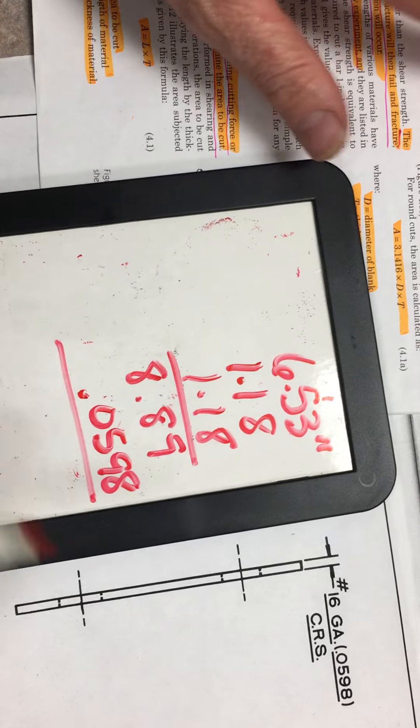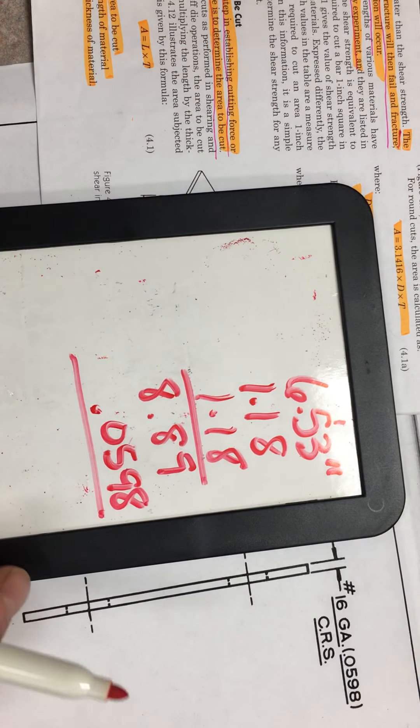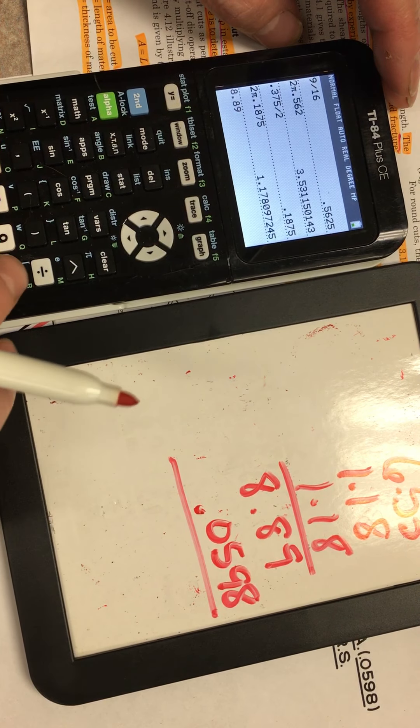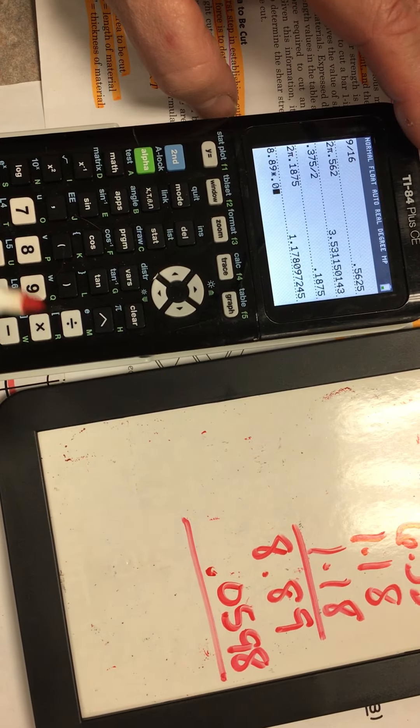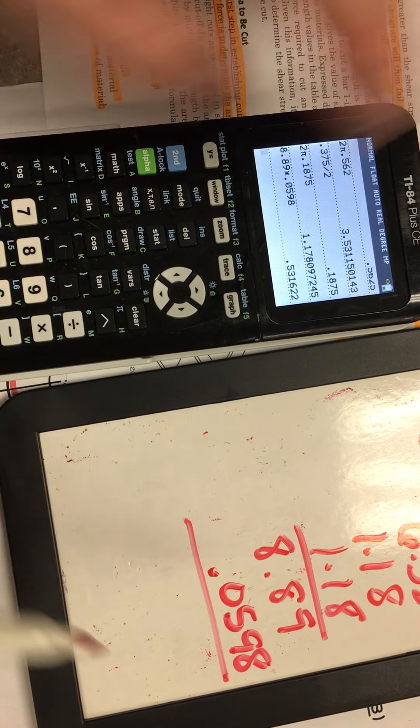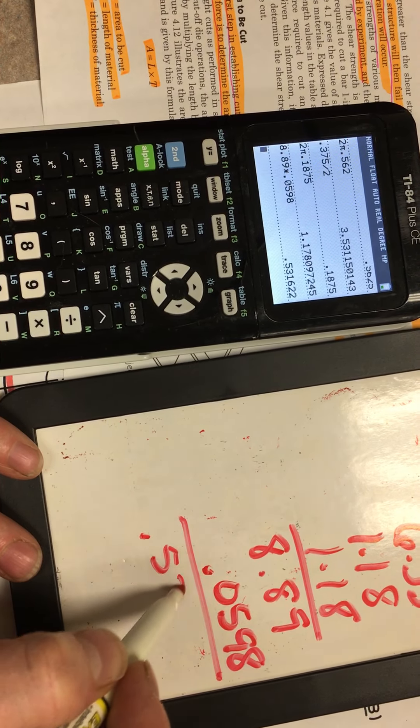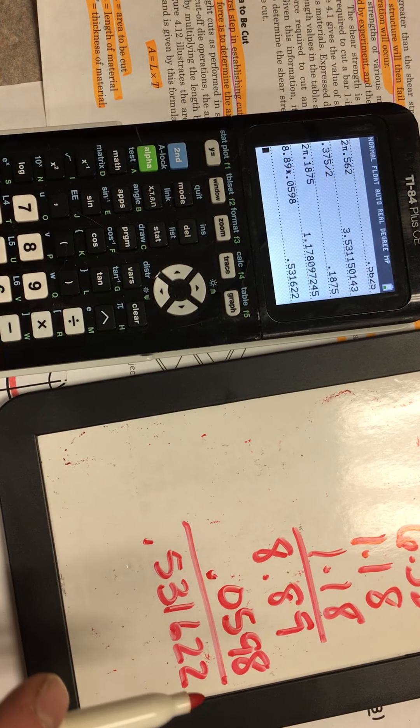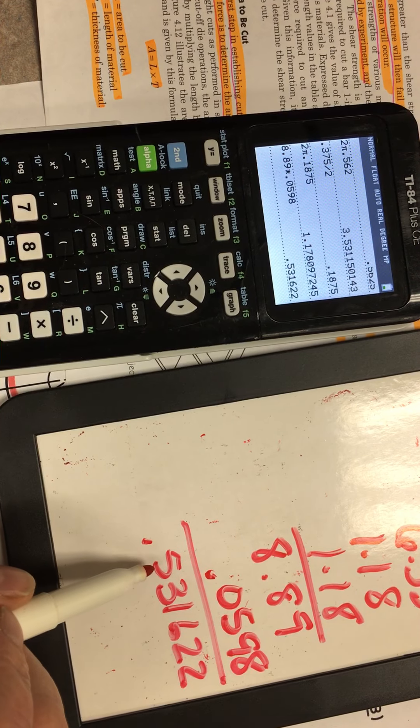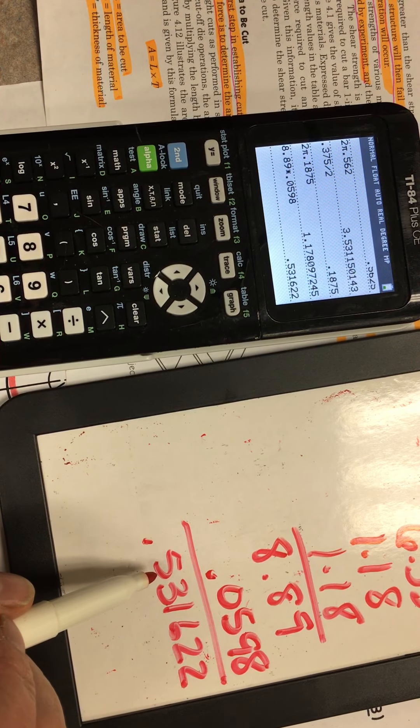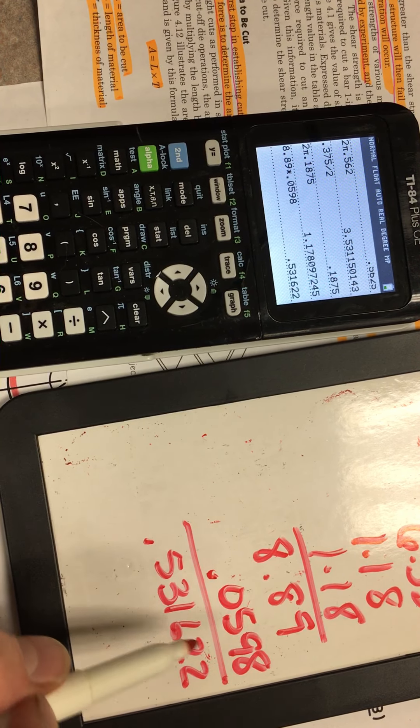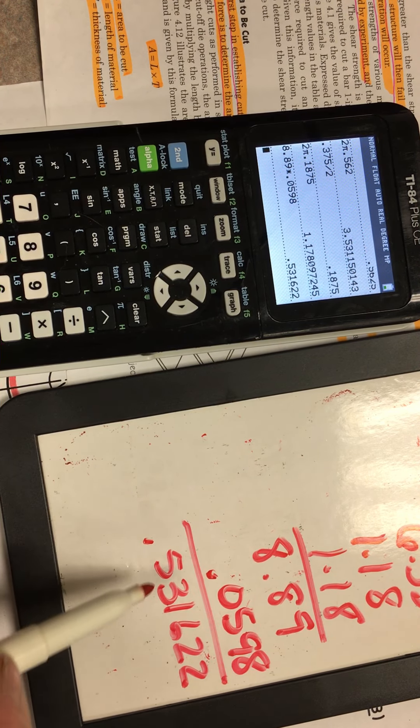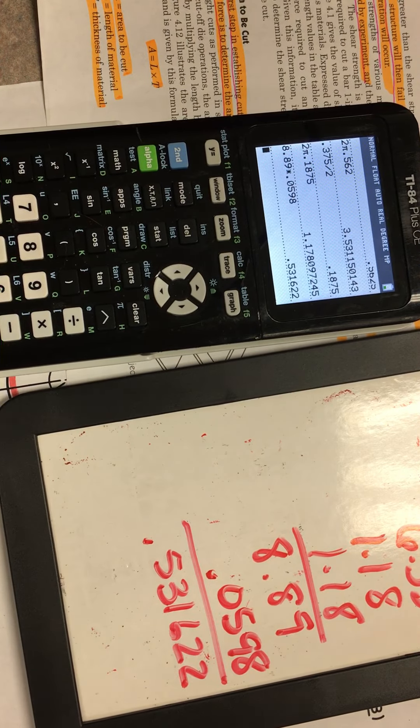What I am going to do now is multiply these two numbers. 8.89 times 0.0598 and I get 0.531622. In case that does not make sense to you, that is actually the area that the shear, the cutting part, is going to come in contact with. And because the part is so thin, that is why it is reduced.